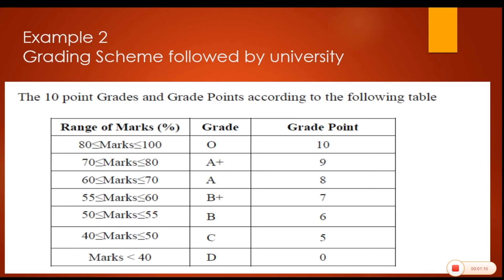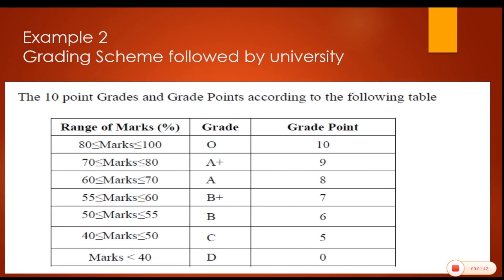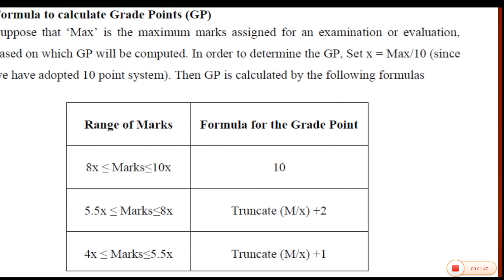You need to understand that when we talk of 40, 40 is included on the lower side. So 50 will not be included here — 50 will be included on the lower side of the interval from 50 to 55. That is how we have to go in for reading this particular table. Now, how has it been calculated? These values have been derived using this particular table.